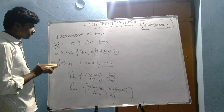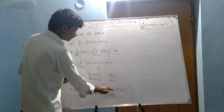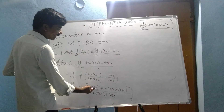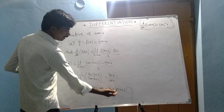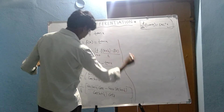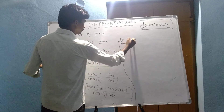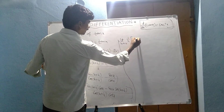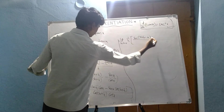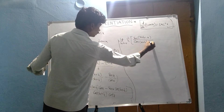Now, notice that sin(x+h)·cos x minus sin x·cos(x+h) matches the identity sin A·cos B minus cos A·sin B, which equals sin(A minus B). So this becomes sin[(x+h) minus x], divided by cos(x+h)·cos x, giving us the limit as h tends to 0 of sin(h)/h times 1/[cos(x+h)·cos x].